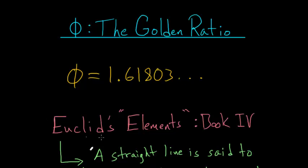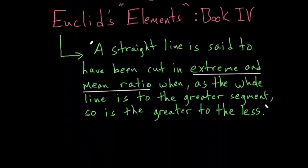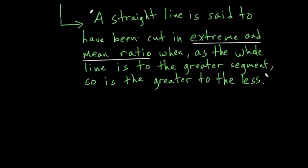The first place that phi is really discussed is in Euclid's Elements, which was written around 300 BCE. In Book 4 of the Elements, Euclid states that a straight line is said to have been cut in extreme and mean ratio when, as the whole line is to the greater segment, so is the greater to the less.